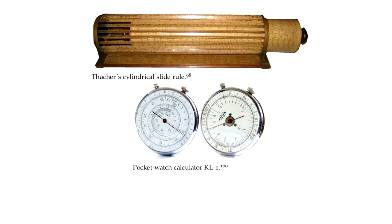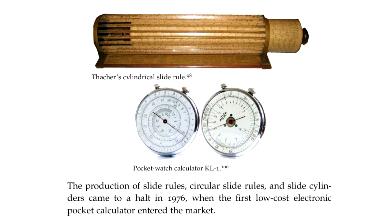This whole invention process was still going on when I was a student in engineering school — which tells you it was some time ago. But in 1976 it was over: commercial production of all slide rules ceased. The first low-cost electronic pocket calculator under $30 appeared, and it was the end of slide rules. From 1620 to 1976, slide rules and slide discs were the primary tool for fast multiplication, division, and so forth.